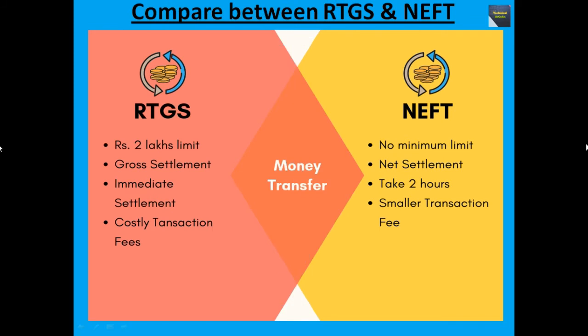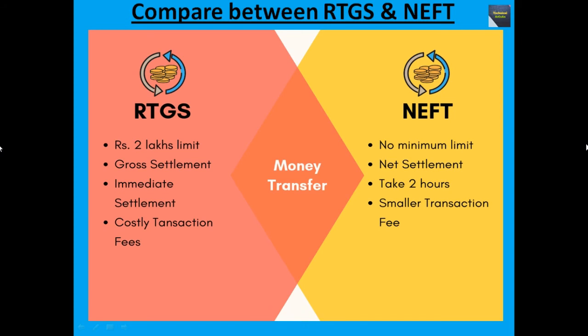Now I compare between RTGS and NEFT. Both RTGS and NEFT are used for money transfer. For RTGS, the minimum limit is rupees 2 lakh, but in case of NEFT there is no minimum limit. For RTGS, money transfer uses gross settlement; for NEFT, it uses net settlement. RTGS provides immediate settlement, but NEFT money transfer takes around 2 hours. RTGS has a costly transaction fee, while NEFT has smaller transaction fees.